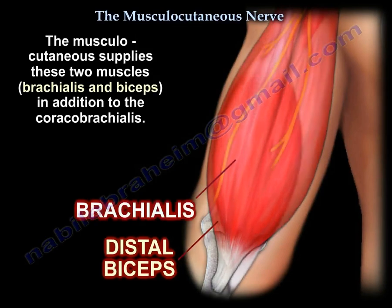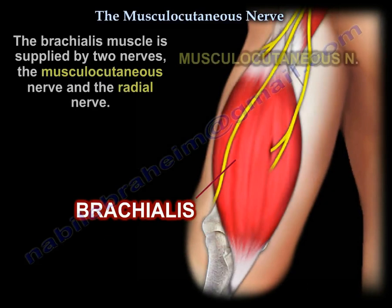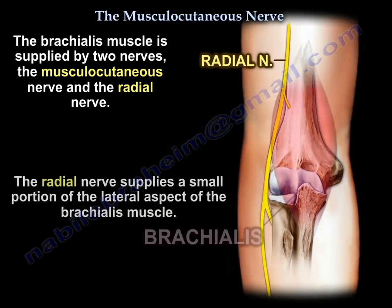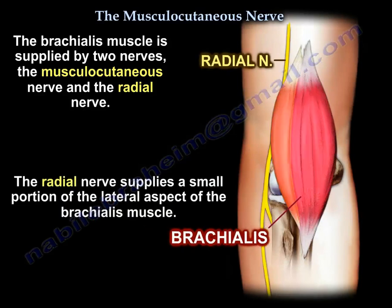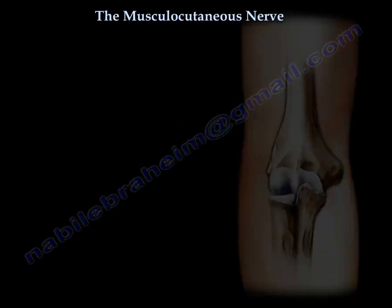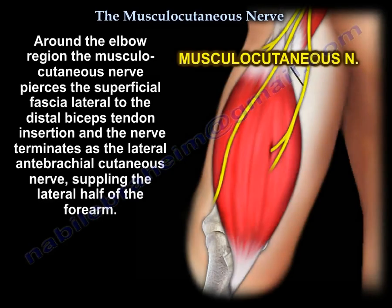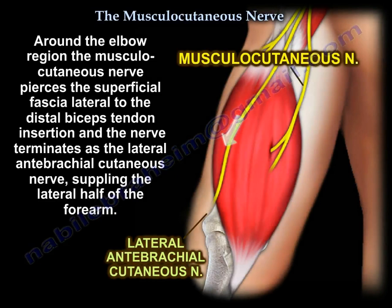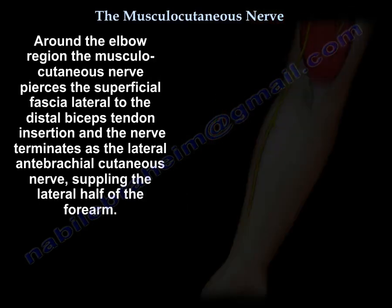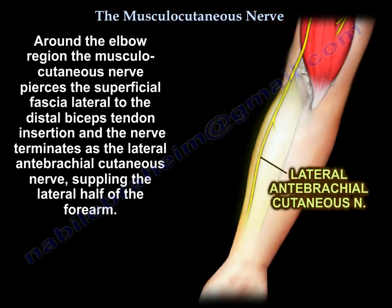It supplies these two muscles — essentially, the nerve supplies the anterior muscles of the arm. Note that the brachialis muscle is supplied by two nerves: the musculocutaneous and the radial nerve. Around the elbow region, it pierces the superficial fascia lateral to the biceps tendon and terminates as the lateral antebrachial cutaneous nerve, which supplies the lateral half of the forearm.